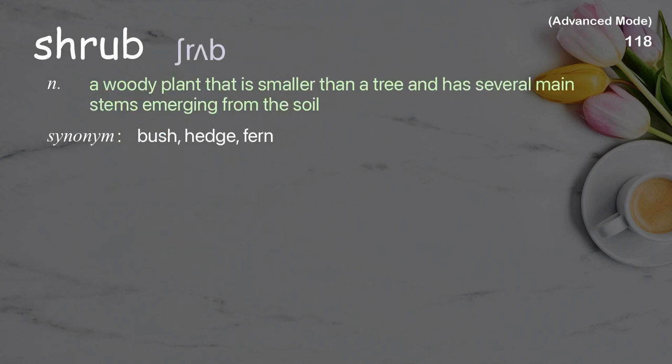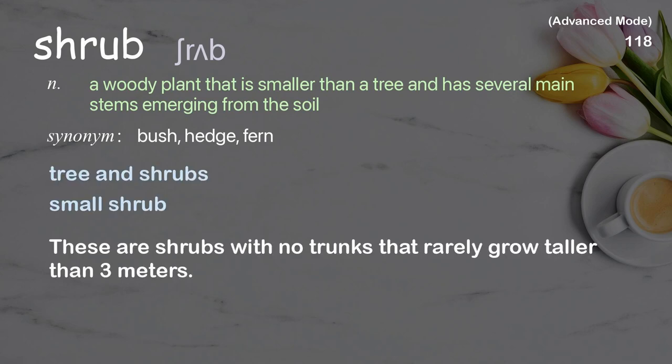Shrub: a woody plant that is smaller than a tree and has several main stems emerging from the soil. Examples: trees and shrubs, small shrub. These are shrubs with no trunks that rarely grow taller than 3 meters.